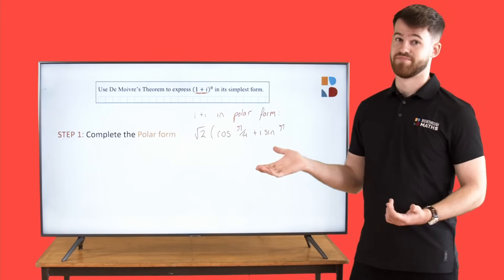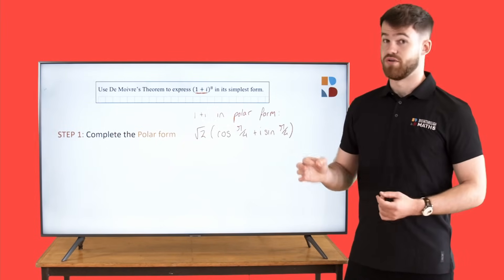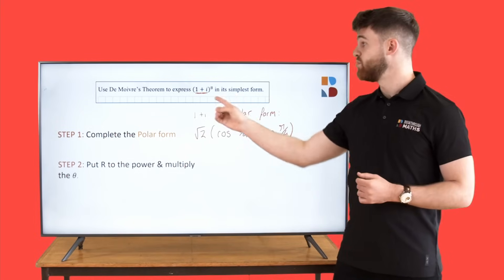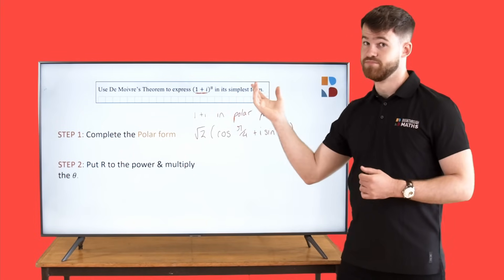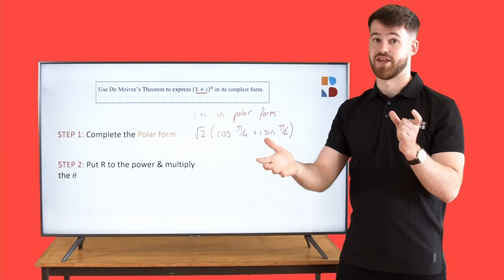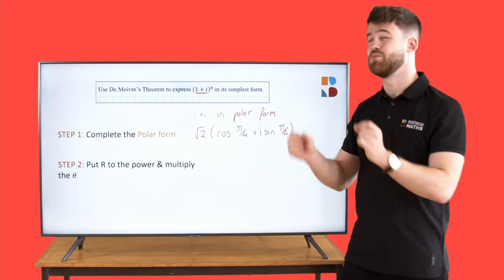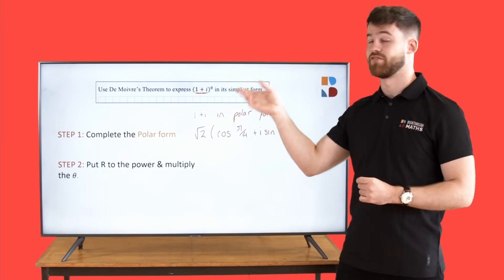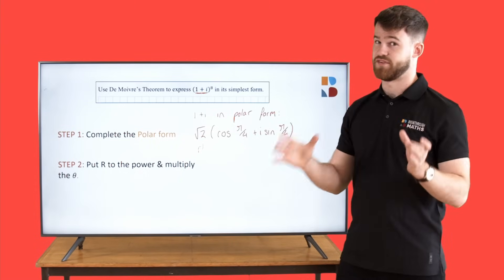Now we can use De Moivre's theorem. De Moivre's theorem just says that when you're putting a complex number to a power, you put the modulus, or the r value, to the power, but you multiply the theta by whatever the power is. So you treat them differently, and you'll see that here.